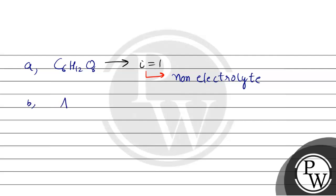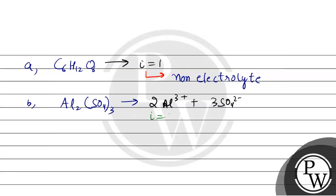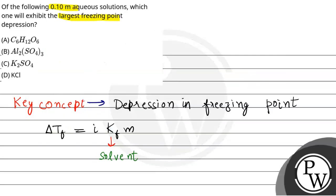Second, we have Al₂(SO₄)₃, that is aluminium sulfate. If we break it down, it dissociates into 2 Al³⁺ plus 3 SO₄²⁻. So the value of i equals 2 plus 3, which gives i = 5.